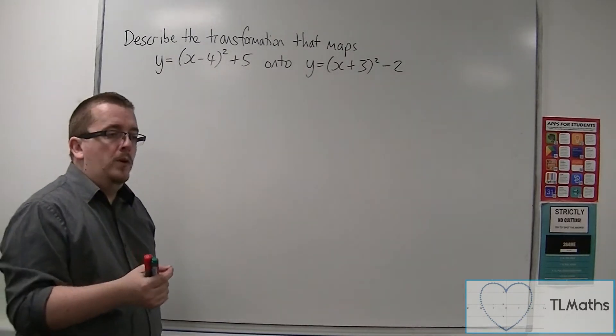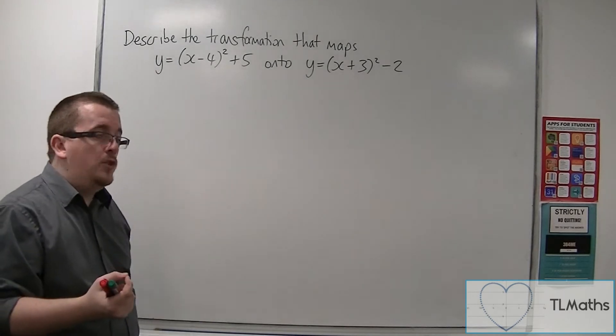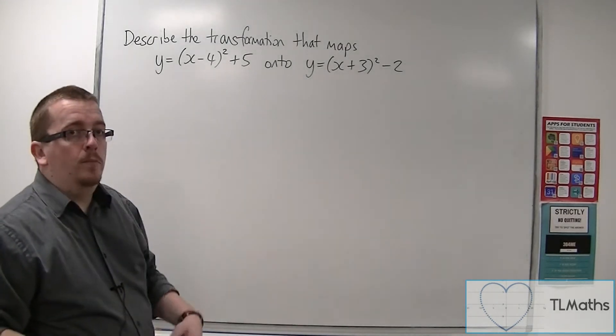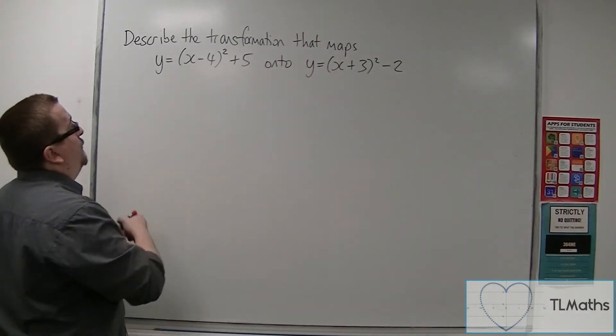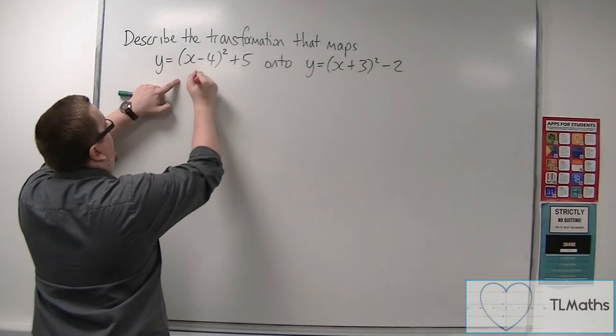So first of all, both of these equations are given to us in completed square form. So I can identify the coordinates of the vertex in each case. So for this one we can say the vertex is at 4, 5.